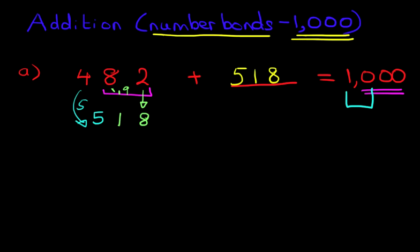I'm going to write it again over here. 482. Now we need to get this number to equal 1000. But what we're going to do is concentrate on the 82. What number do we need to add to 82 for it to become 100?